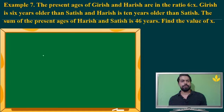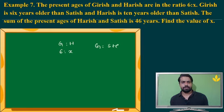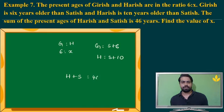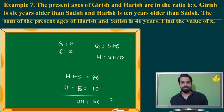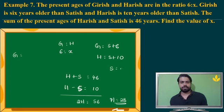This is the last question in this video. The ages of Girish and Harish are in the ratio 6 is to X, where Girish is 6 years older than Satish, and Harish is 10 years older than Satish. The sum of the ages of Harish and Satish is equal to 46, and Harish minus Satish equals 10. Solving, Harish's age is 28 years. So Satish's age is Harish's age minus 10.